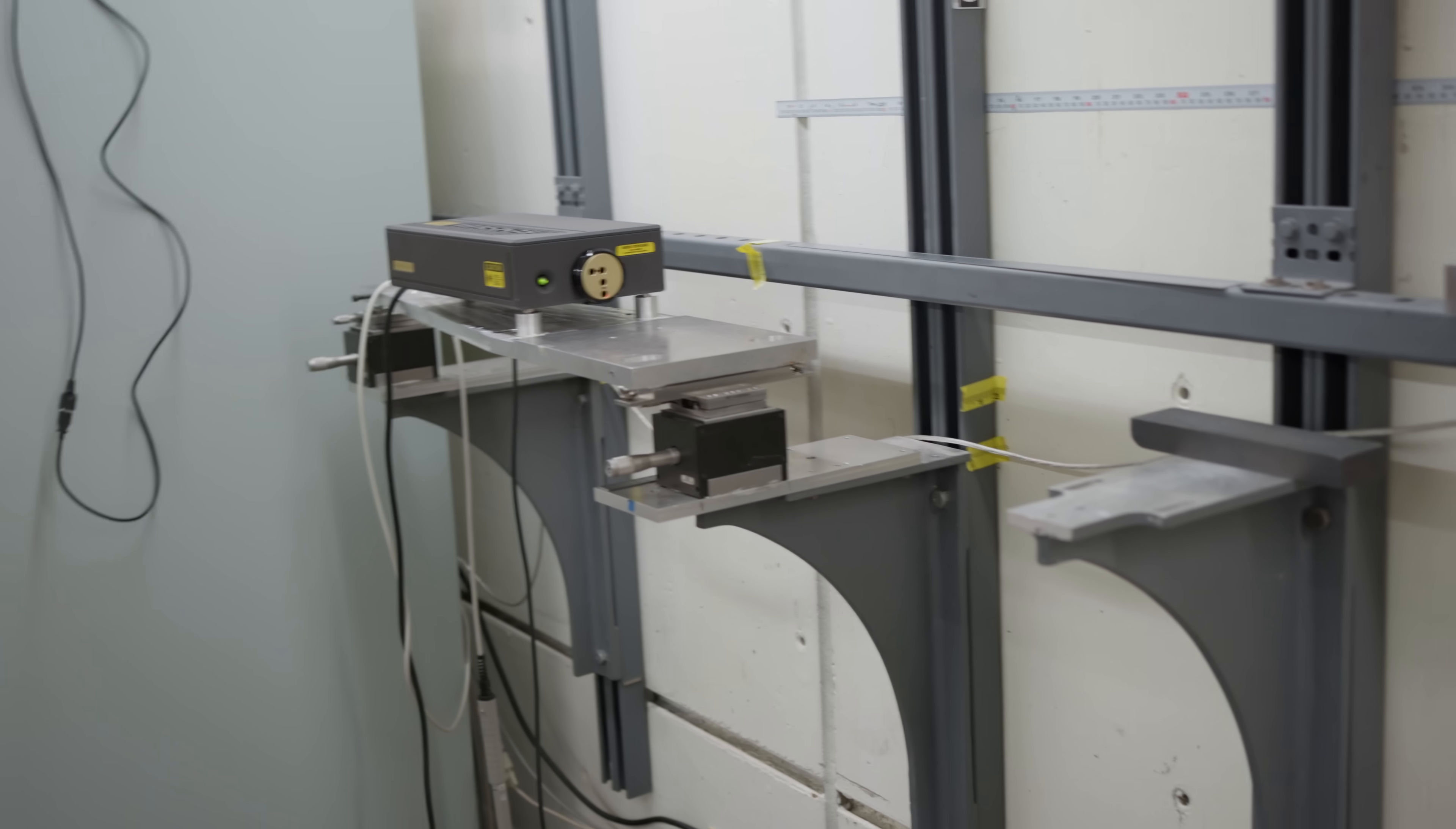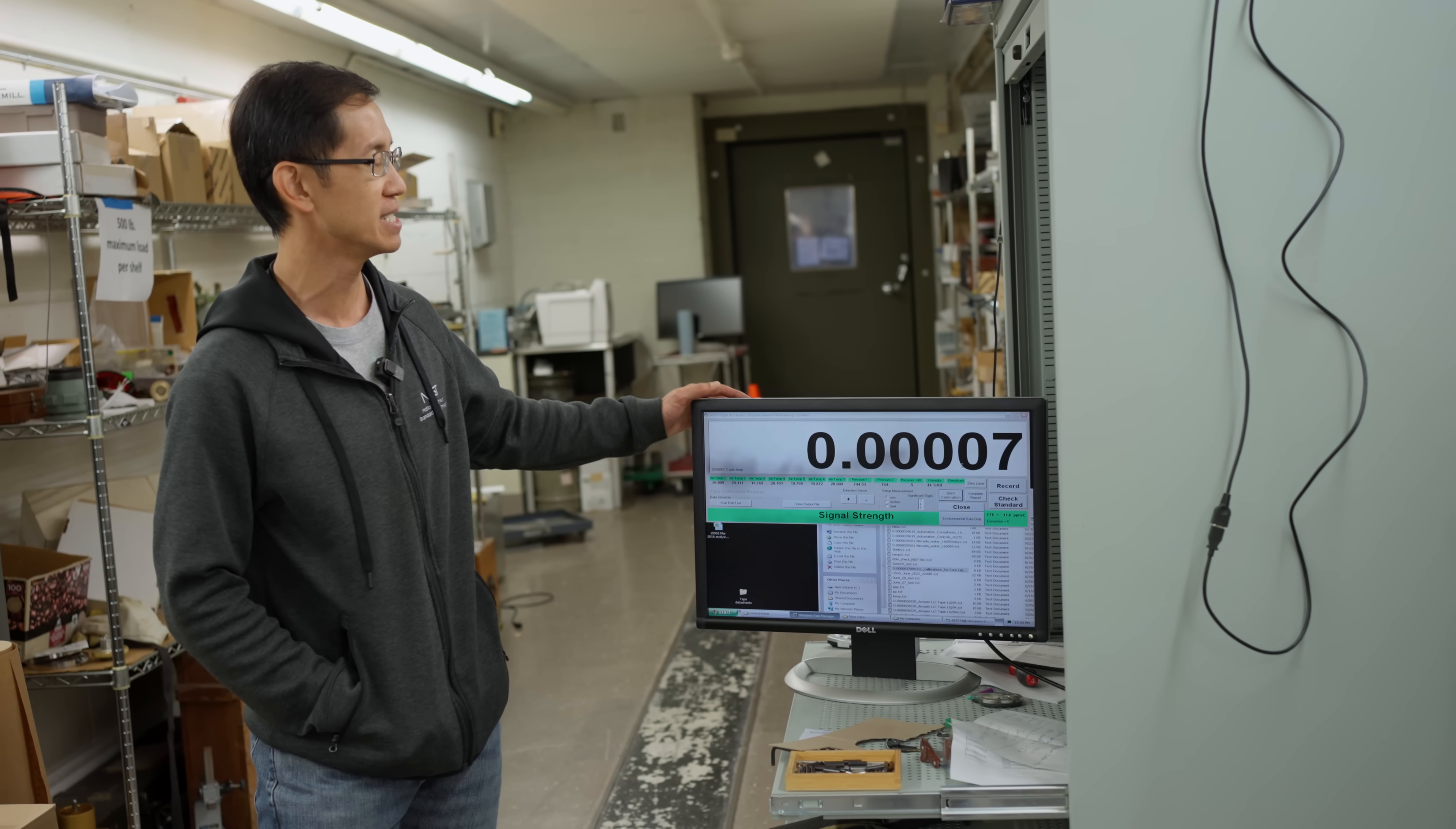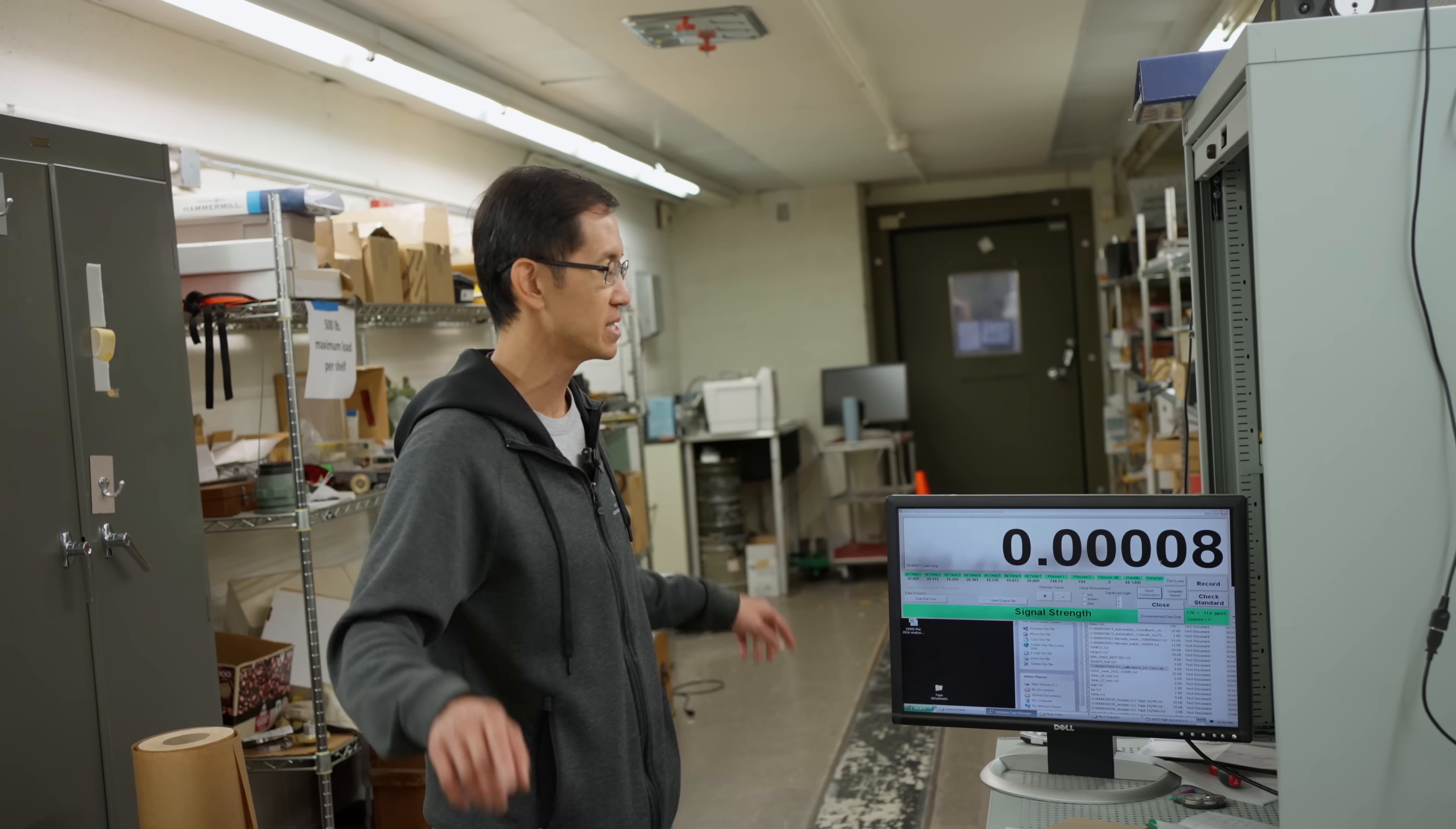So we have a custom written software to capture the data as we are measuring. This, as you can see, if you pay close attention to the user interface, is a Windows XP machine. Yes, it's a Windows XP machine because we actually don't need that much computing power to calibrate measuring tape. We're just measuring along one distance.